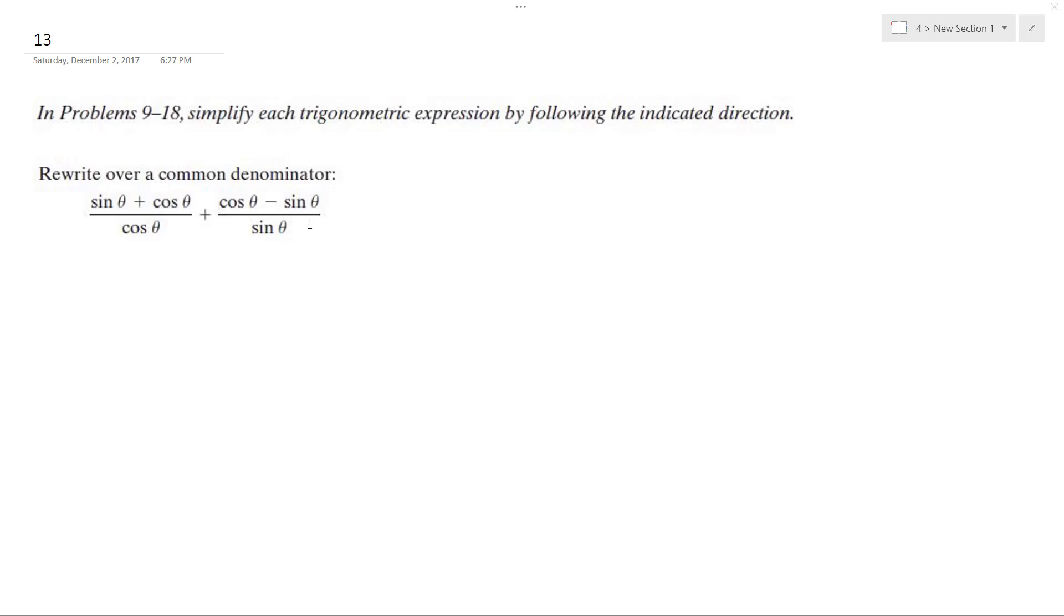All right, so we got this problem. We want to rewrite this over a common denominator. So the left side is going to be multiplied by sine over sine, and this side is going to be multiplied by cosine over cosine.